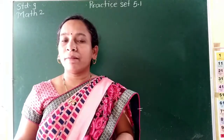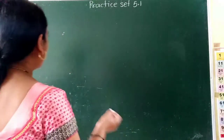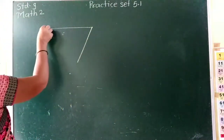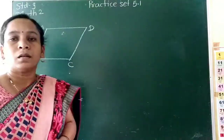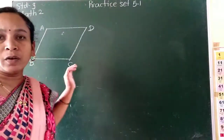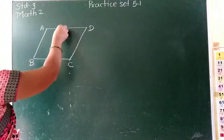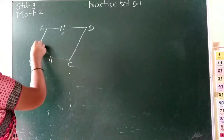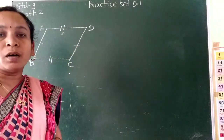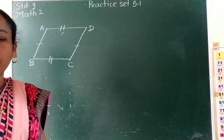For the practice set, I will explain what is the property of a parallelogram. Here, this is a parallelogram. Property of a parallelogram related with the sides: opposite sides are congruent. Means AD is congruent with BC and AB is congruent with DC. So here we can say that opposite sides of a parallelogram are congruent.